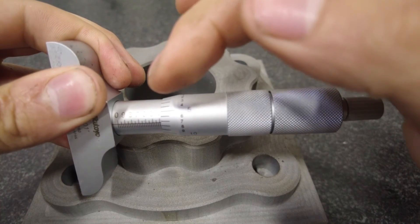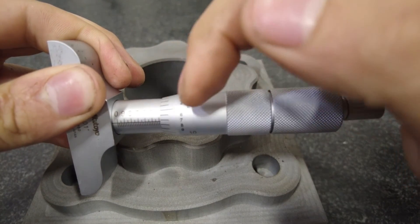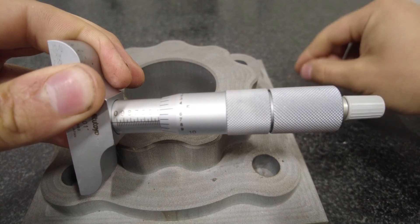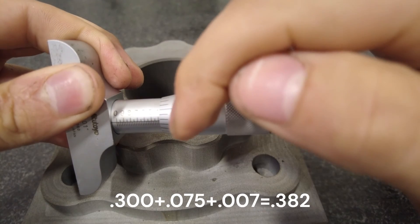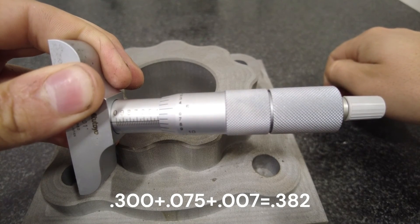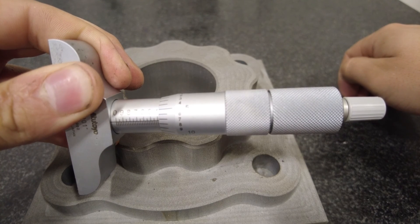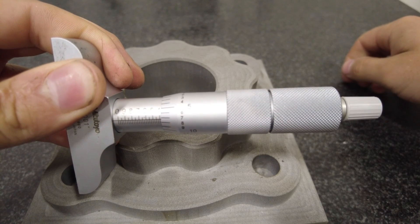Right here you can see the 3 is covered then up to the 75 dash is covered so we've got 0.375 and then we need to add 7 to that. So it's going to be 0.382 is going to be our final reading. And that's how to read a depth micrometer.